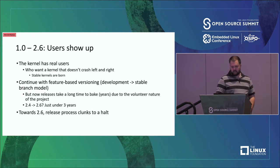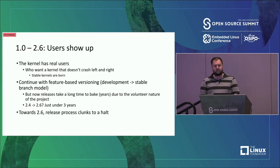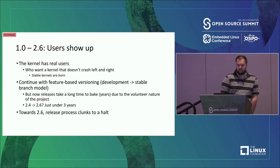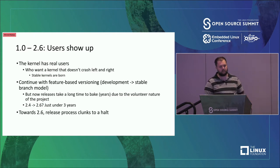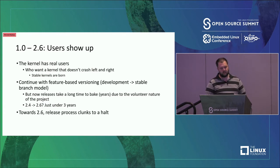When he had a critical mass of code that felt like an operating system, he said 'this is version 1, go ahead and use it.' When the kernel reached version 1, it got users who aren't necessarily kernel developers — users who want to develop applications on top, users who want to run workloads. Development branches are bad for stability, and this is where the concept of stable kernels was born.